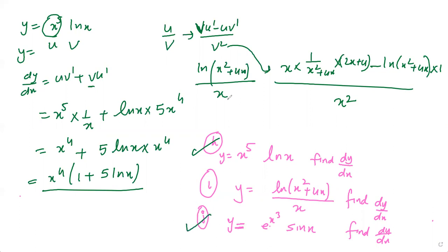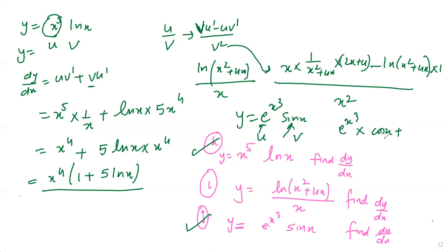For part j: y equals e to the power x³ times sin(x). u is e^(x³) and v is sin(x). Using the product rule: u·v' plus v·u', it becomes e^(x³) times cos(x) plus sin(x) times e^(x³) times 3x². This is a quick recap of chain rule, product rule, and quotient rule.